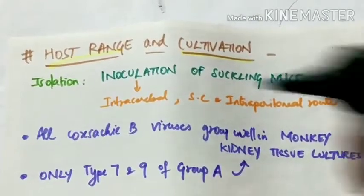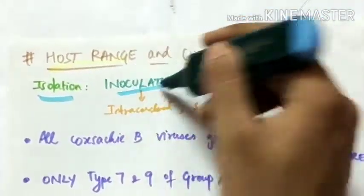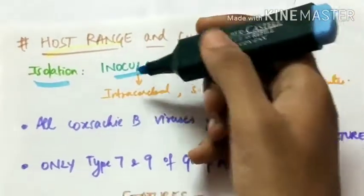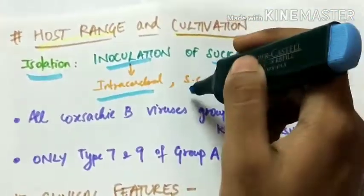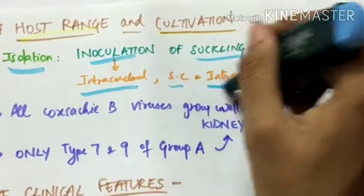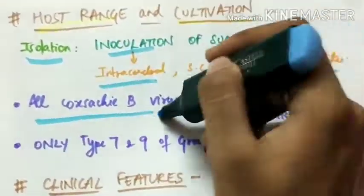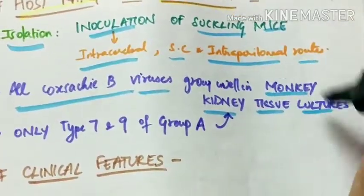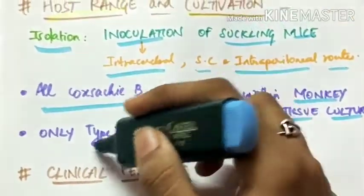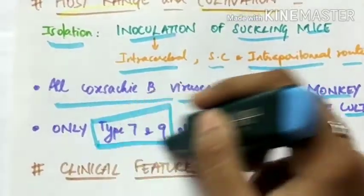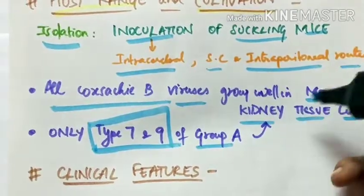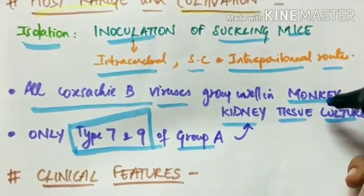Isolation of Coxsackie viruses is by inoculation into suckling mice via intracerebral, subcutaneous, and intraperitoneal routes. All Coxsackie B viruses grow well in monkey kidney tissue cultures, whereas only types 7 and 9 out of the 24 group A types grow well in monkey kidney tissue culture.